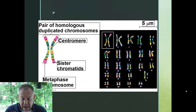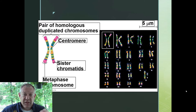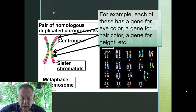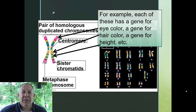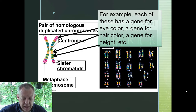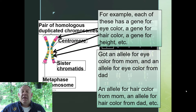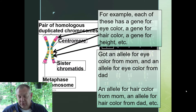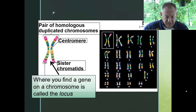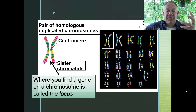Looking at a karyotype of humans and a pair of homologous chromosomes — these are duplicated chromosomes, so each one at this point is a pair of sister chromatids. On those homologous pairs, each might have a gene for eye color, a gene for hair color, a gene for height. There are several genes that control the color of your hair and several genes that control the color of your eyes. The point is that each member of this pair has the same genes in the same location. For each of those genes, you got one allele from your mother and one from your father. Those alleles might be the same or different depending upon your parents' characteristics. Where that gene is found on the chromosome is called its locus.